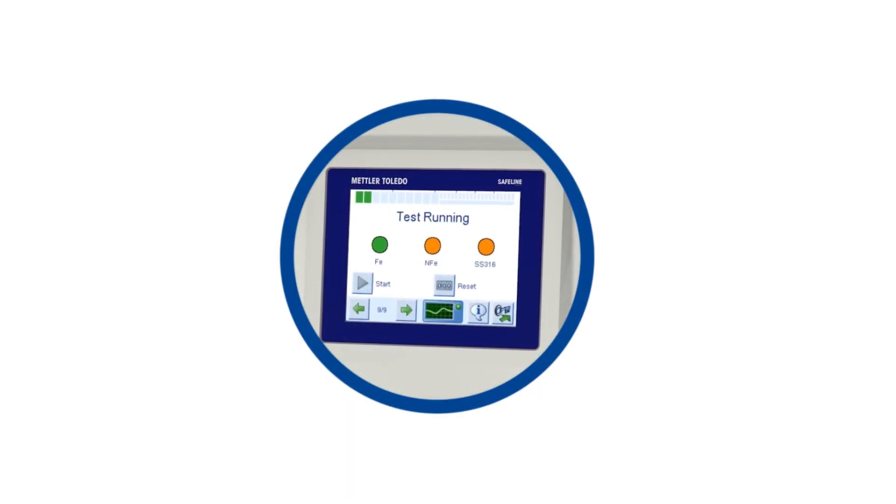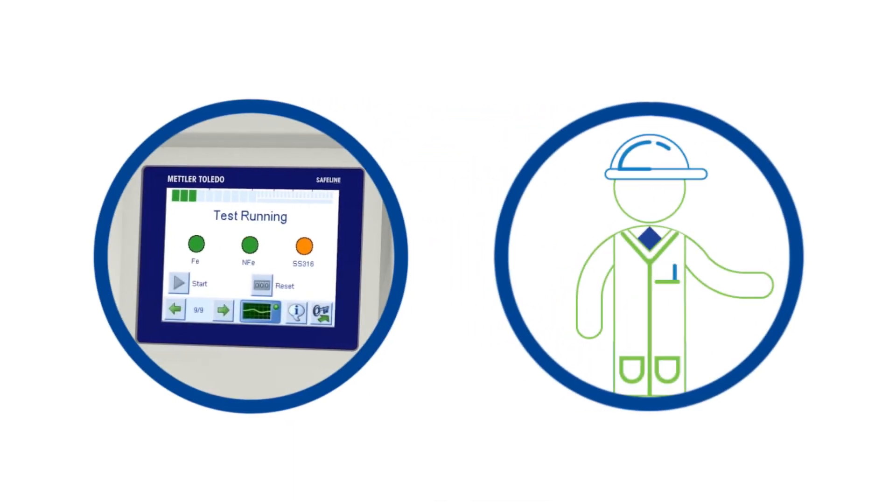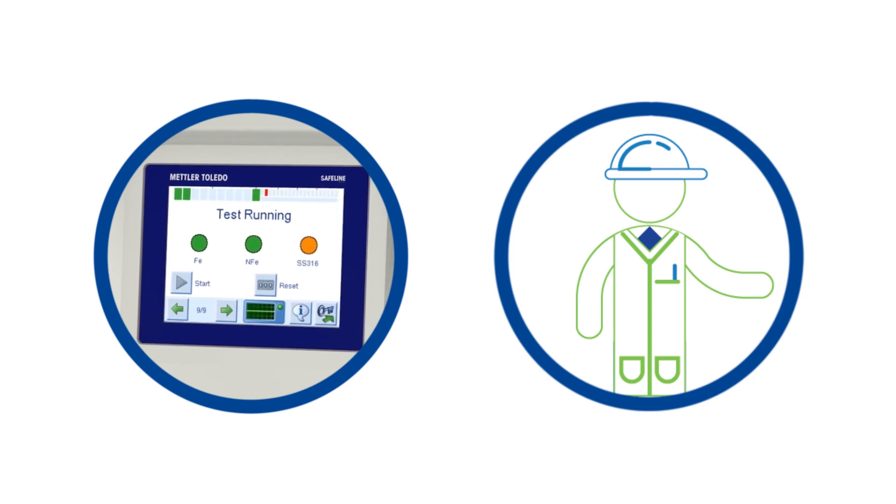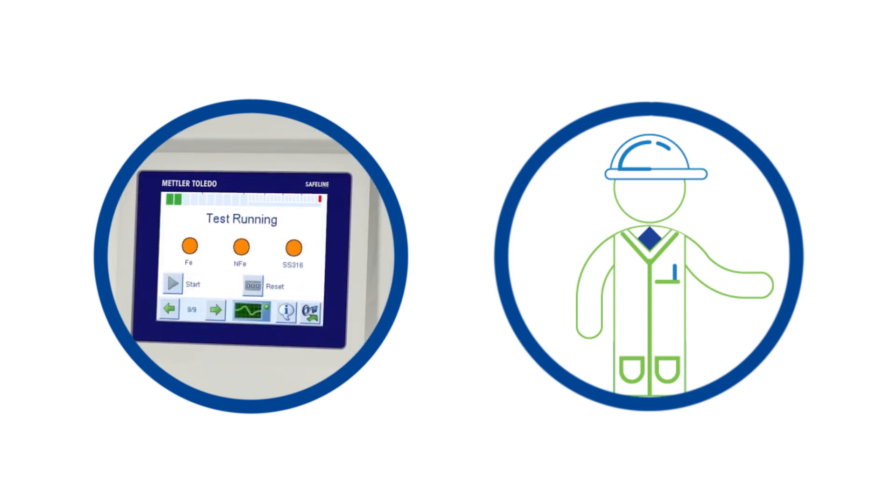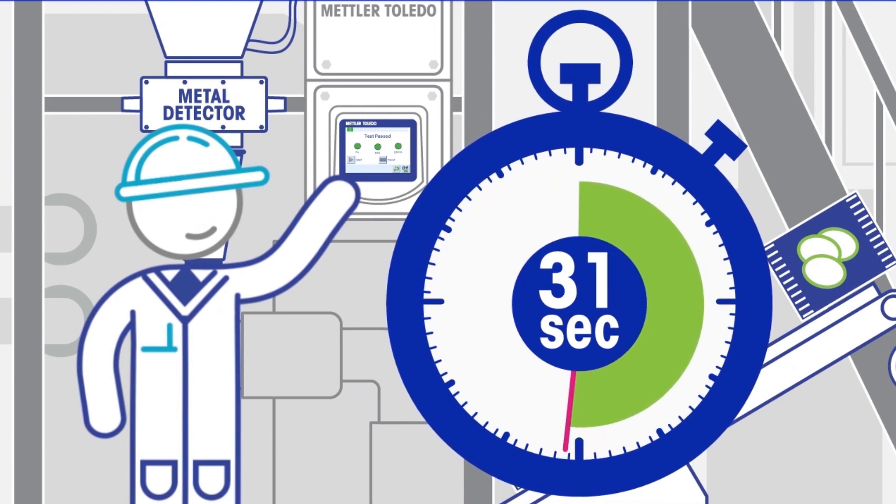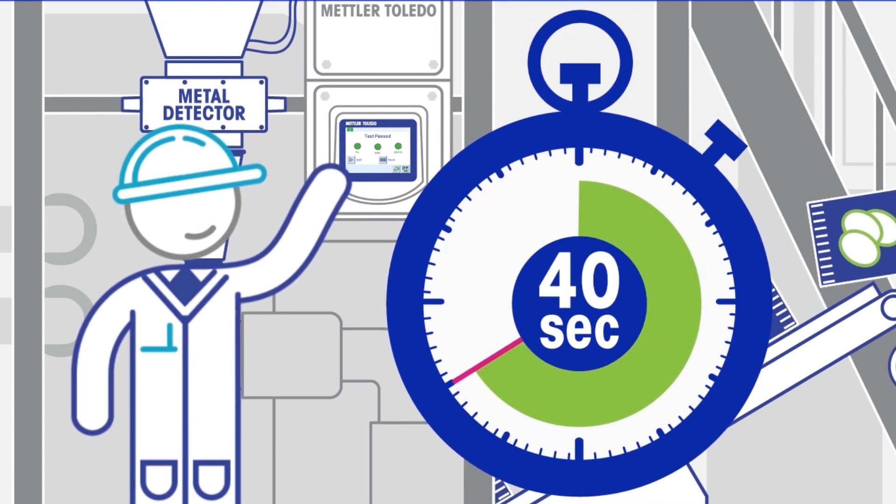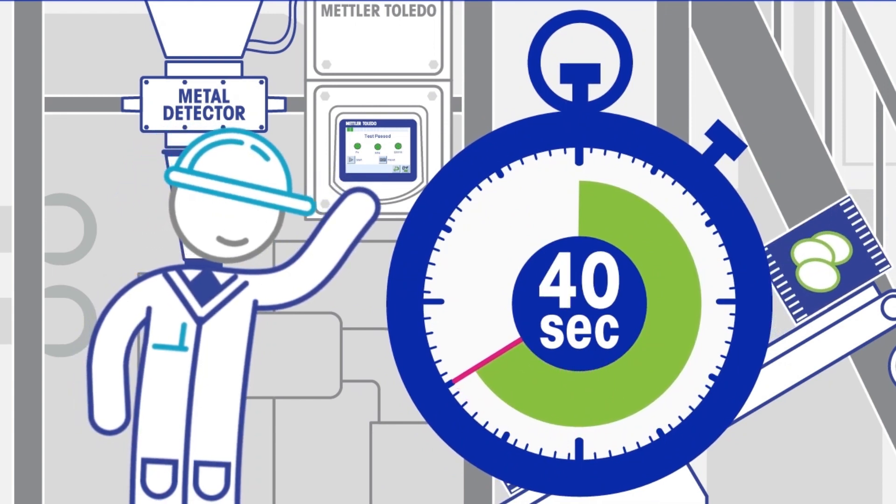Metal detector testing using ATS requires one, rather than two operators to carry out a complete end-to-end three metal test. This can be done in under 40 seconds, compared to the average three to four minutes using more traditional manual methods of testing.